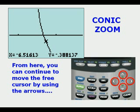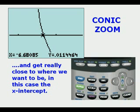From here you can continue to move the free cursor by moving the arrows. And to get really close to where we want to be, in this case the x-intercept on the left.